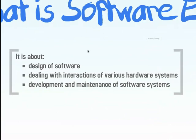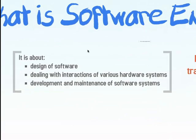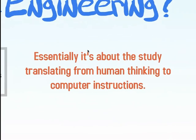So what's it about? I kind of have three high-level things. I think it's about the design of software, how we interact with various hardware systems, and the development and maintenance of software systems or programs. If you want to wrap it up in one sentence, it's basically about taking what a human thinks — a human process — and turning it into a way that can be represented in computer instructions or some mechanical device that automates that process for us.